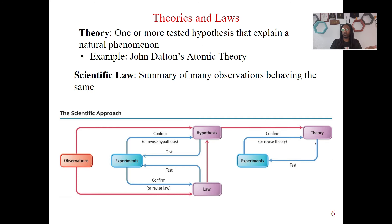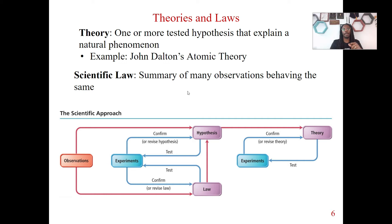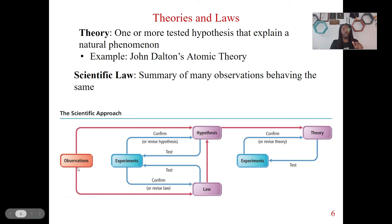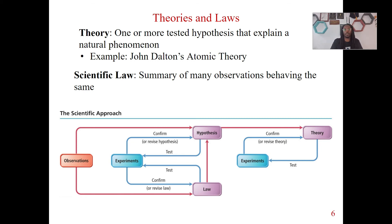Now let's talk about the law. Say we start back with an observation. What if I see the same thing happening over and over again, but I can't explain what's going on — I have no idea why, I can't explain it. But I know if I do this, or if I see that, I know it's going to happen automatically. So this observation, even if I don't have an explanation yet, can become a law. Theories require a hypothesis — you need to test a hypothesis. With a law, that doesn't matter, because we already know it's going to happen. I don't know why it's happening; I just know that it's about to happen. That's the law.